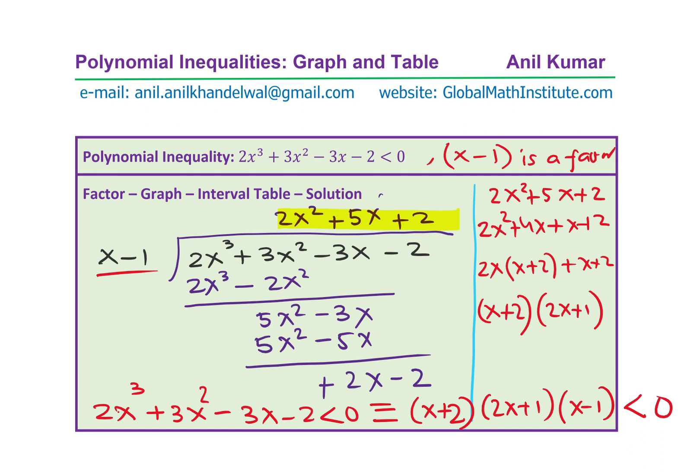So this is very important. So first step is to factor. Once you have factored, we know the zeros. So from here, you know the zeros. Zeros are at x = -2, and this is at -1/2, and then at +1.